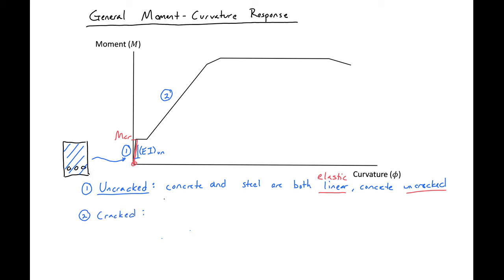In this region we'll have a slope of EI cracked, and if we look at our section our tension stresses are going to crack up in our section, so we can only consider our concrete in compression and our steel in tension in our section stiffness.